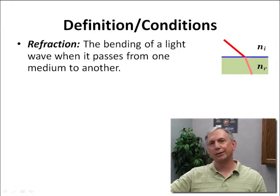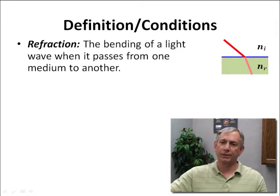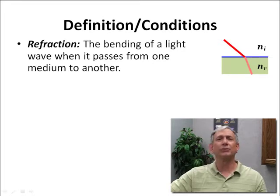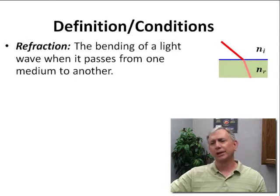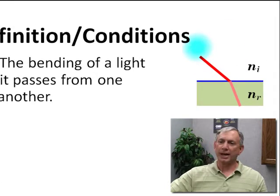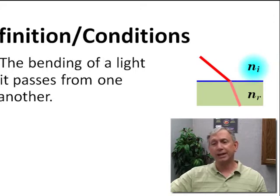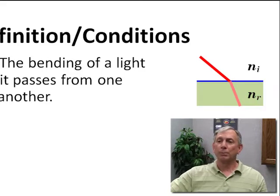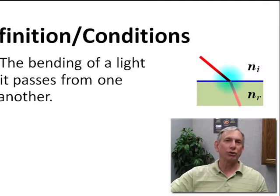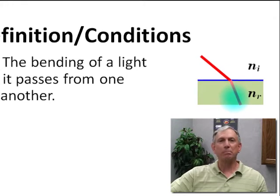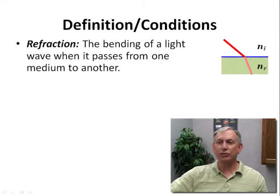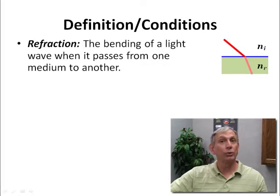Let's begin this tutorial on refraction by first defining what refraction is. As you can see on the slide, refraction is defined as the bending of light when it passes from one medium into another. A beam of light comes in through the incident medium, crosses the interface between the two media, and the light changes direction — it actually bends. This action of crossing the medium and the bending of light is what we call refraction.